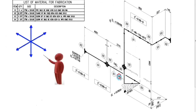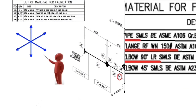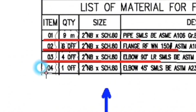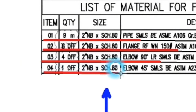This is number 4, the last detail. We look at the material list. Detail number 4: 1 piece, 2 inches, schedule 80, 45 degree elbow.